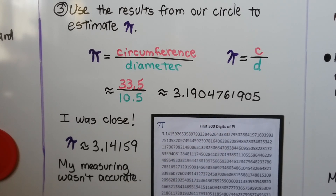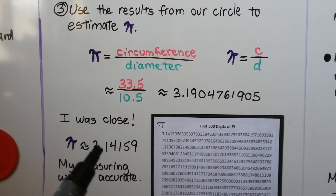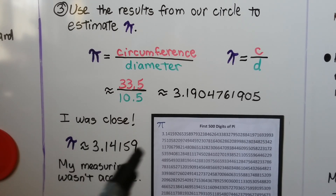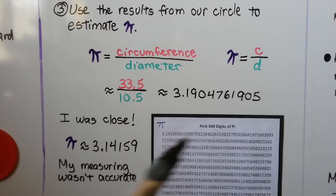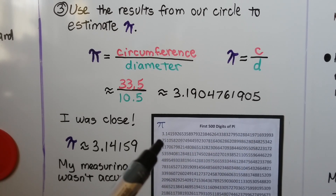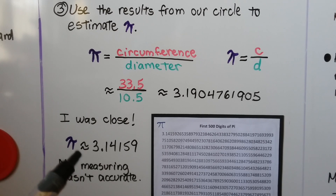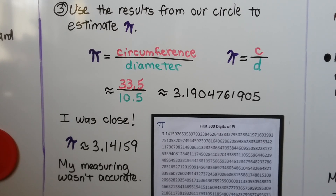I was close, because pi is approximately 3.14. Here are the first 500 digits of pi — it keeps going on and on. We use 3.14 with an approximation symbol because we're not being exact. My measuring wasn't perfectly accurate, but it was close — I got 3.19.